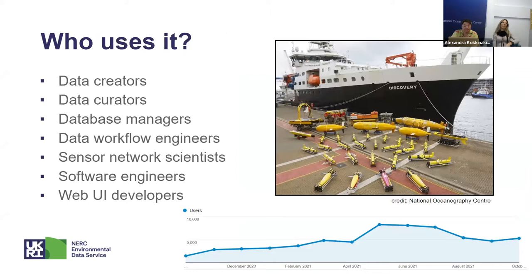So who uses the NVS? It is used by people who create and curate data, database managers, data workflow engineers in the marine and related scientific field. A large proportion of current users are actually scientists, data managers and engineers involved in sensor-based observing networks, because of the growth in autonomous and semi-autonomous observations of the environment and the increasing demand for controlled vocabularies associated with that. More and more the NVS is also accessed by tools developed by API and web user developers. The graph at the bottom of the slide shows monthly number of users from October 2020 to 2021, with steady values between 5,000 and 8,000 users per month for the second part of that year.